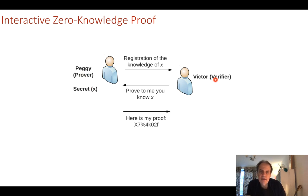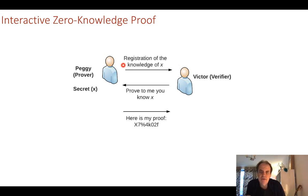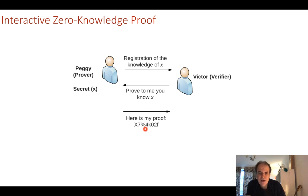With zero knowledge proof, Peggy the prover has a secret and Victor must verify that Peggy actually knows this secret. Often we pass information such as our password, our date of birth, and so on to prove things. But is it possible to register some knowledge of a value x, and then whenever Victor wants, he asks Peggy for proof that she still knows the secret? Through this challenge, Peggy creates a proof of work to show that she still knows the value of x, so Victor never has to know what the secret is.